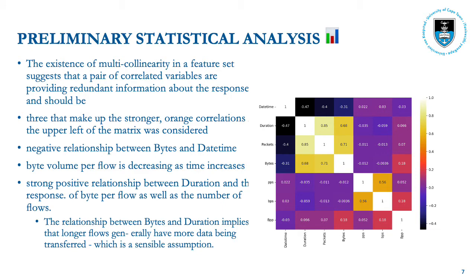After pre-processing, I performed a preliminary statistical analysis to garner relationships and information from the dataset before providing them to the models. There is a 3x3 grid of strong correlative relationships on the right. The negative relationship between bytes and datetime shows that byte volume per flow is decreasing as time increases. The strong positive relationship between duration and the response bytes shows that longer flows generally have more data being transferred, which is a sensible assumption.